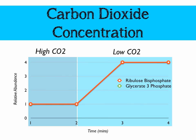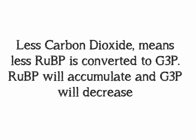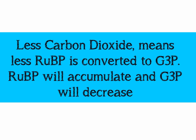As we increase the time, ribulose bisphosphate is going to increase when we move to the low CO2 environment. Similarly, but completely the opposite, glycerate-3-phosphate or G3P is going to decrease. With less CO2 available, that means that less ribulose bisphosphate is converted to G3P. Ribulose bisphosphate will accumulate and glycerate-3-phosphate will decrease.